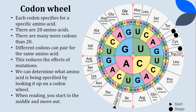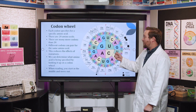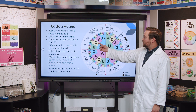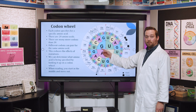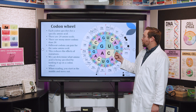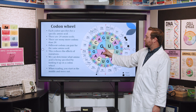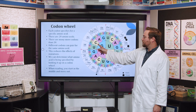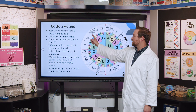Let's take a closer look at the codon wheel and go through a couple of different codons. Let's say the codon you're looking for is G, C, U. You start with the first nitrogen base in the middle — that's G — then go to C, and then the last base is U. G-C-U would be coding for the amino acid alanine.